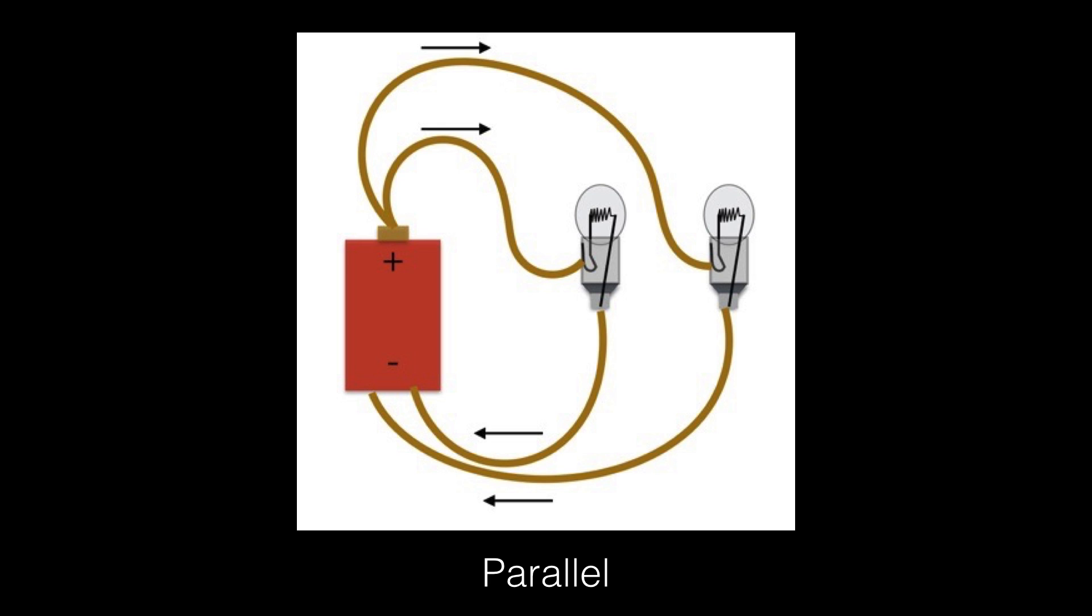This is the other way to hook up two light bulbs. This is called parallel. So in this case, you can see that each light bulb has its own separate circuit in order to have current going through it. So if I take one of these bulbs out, it wouldn't really affect the other one. Not really. It could a little bit, but not really. So let's see this actually happen.